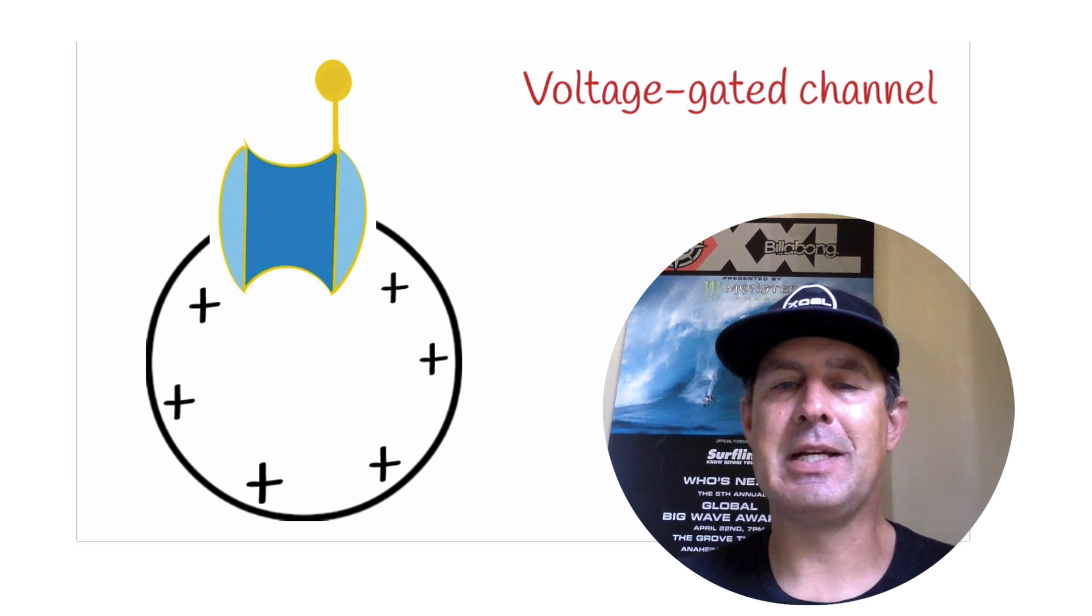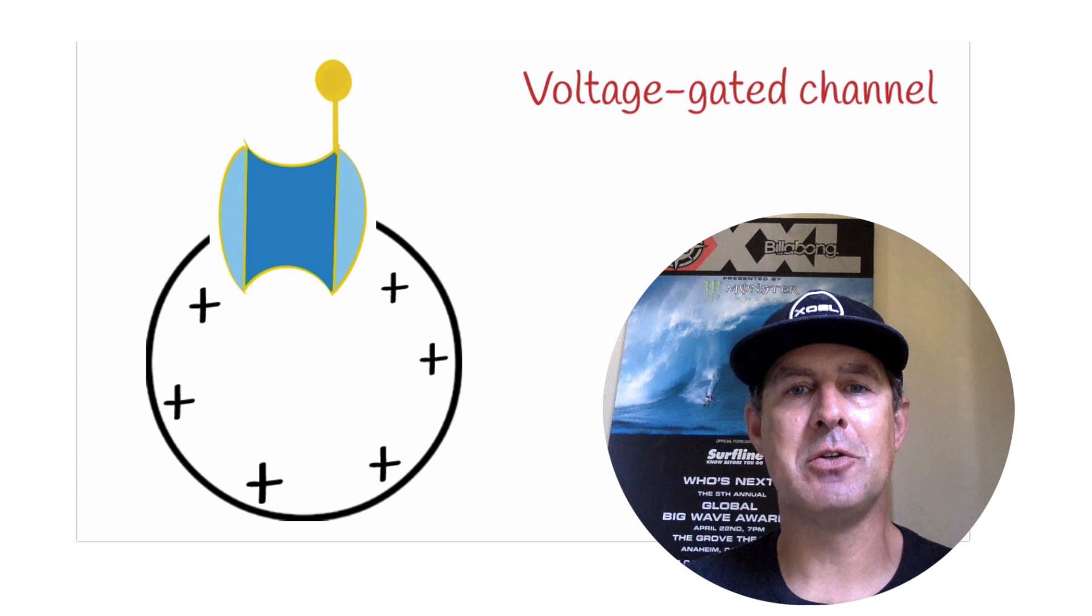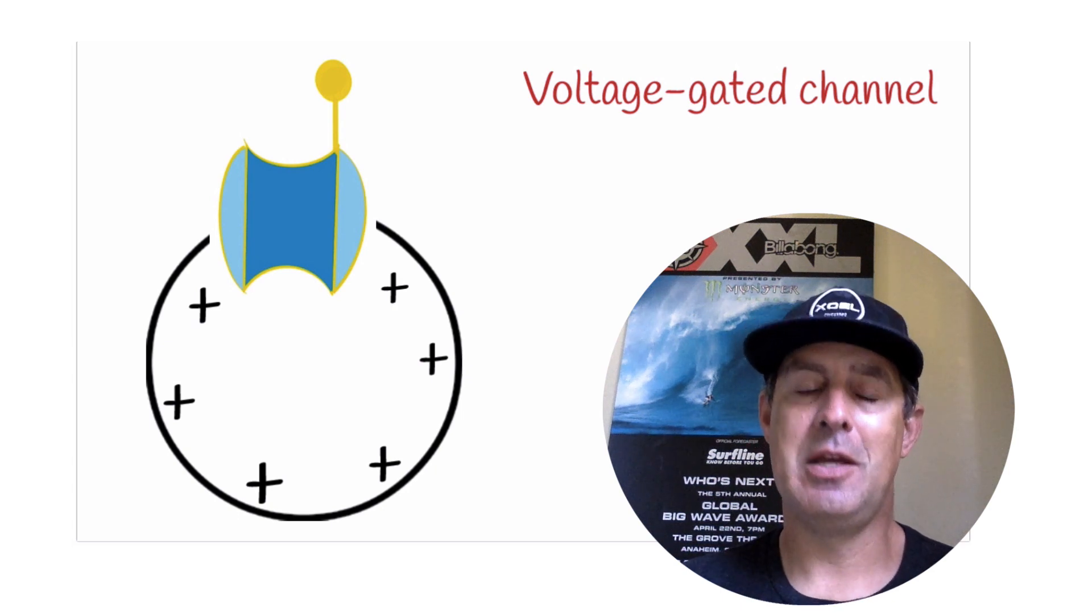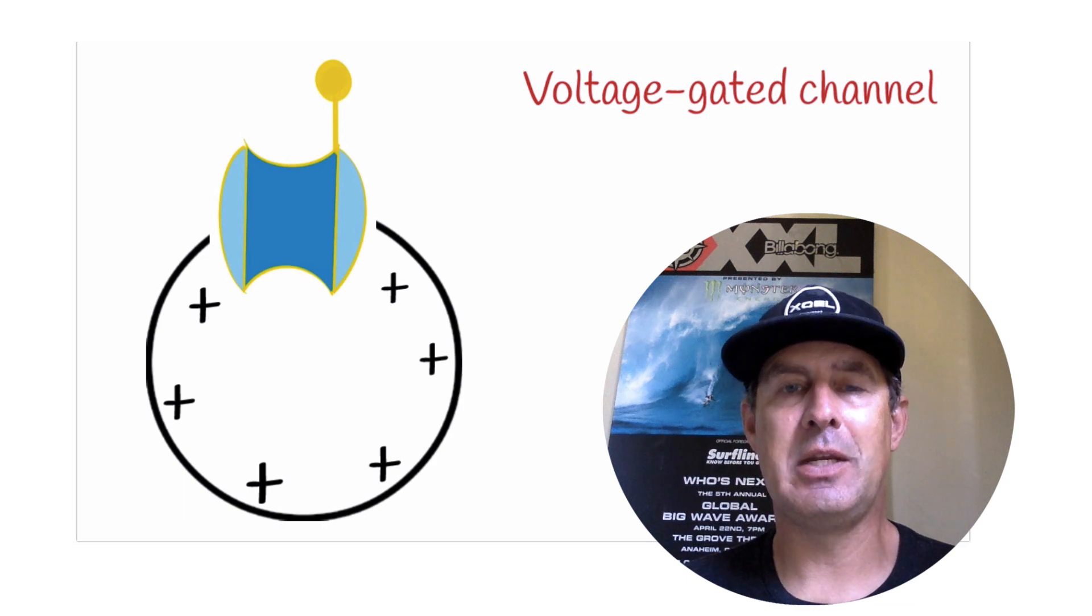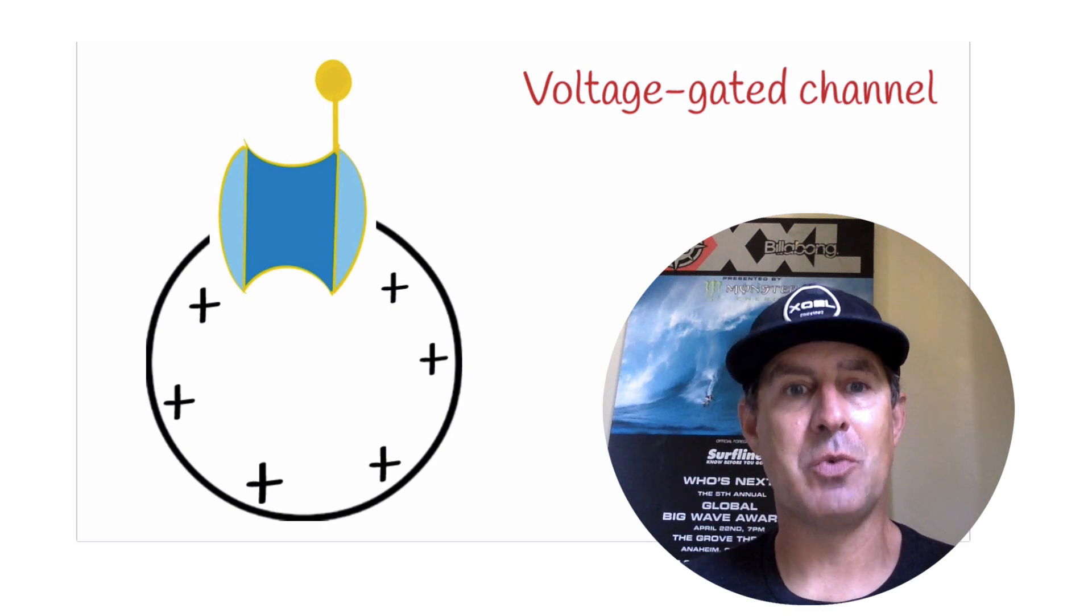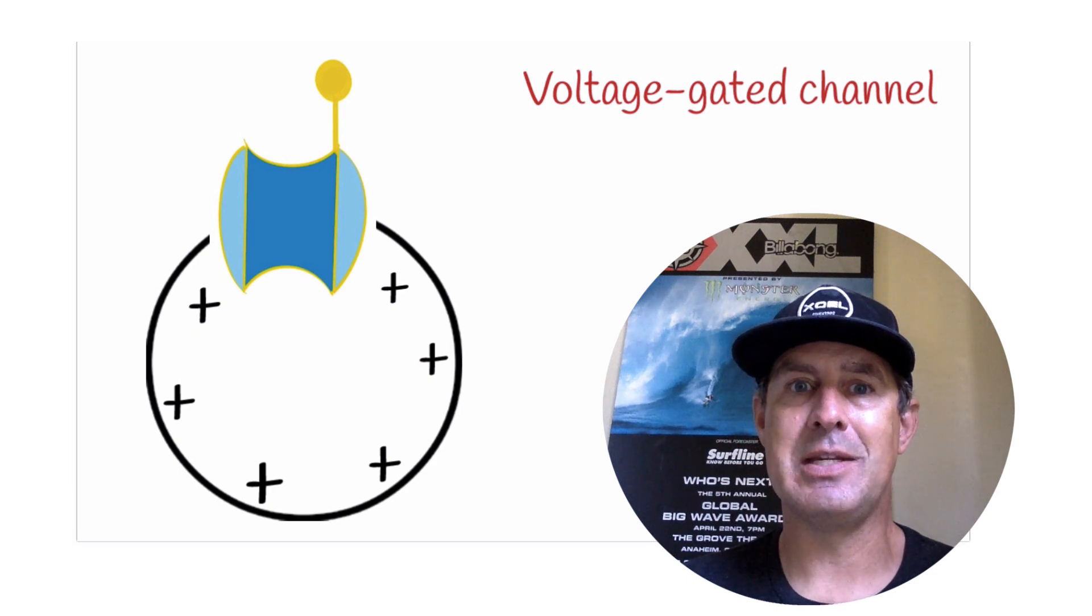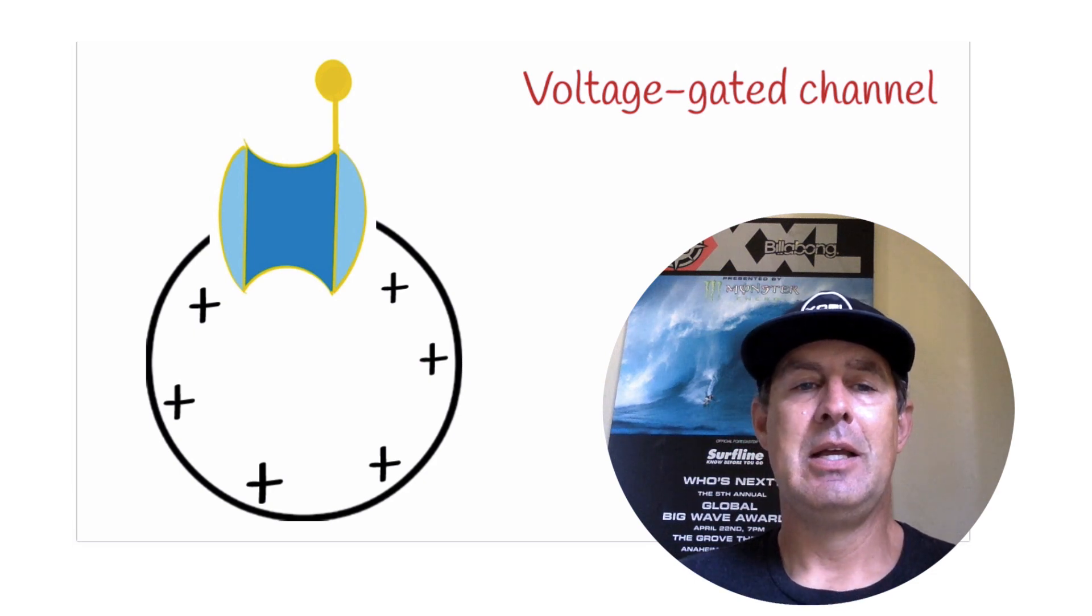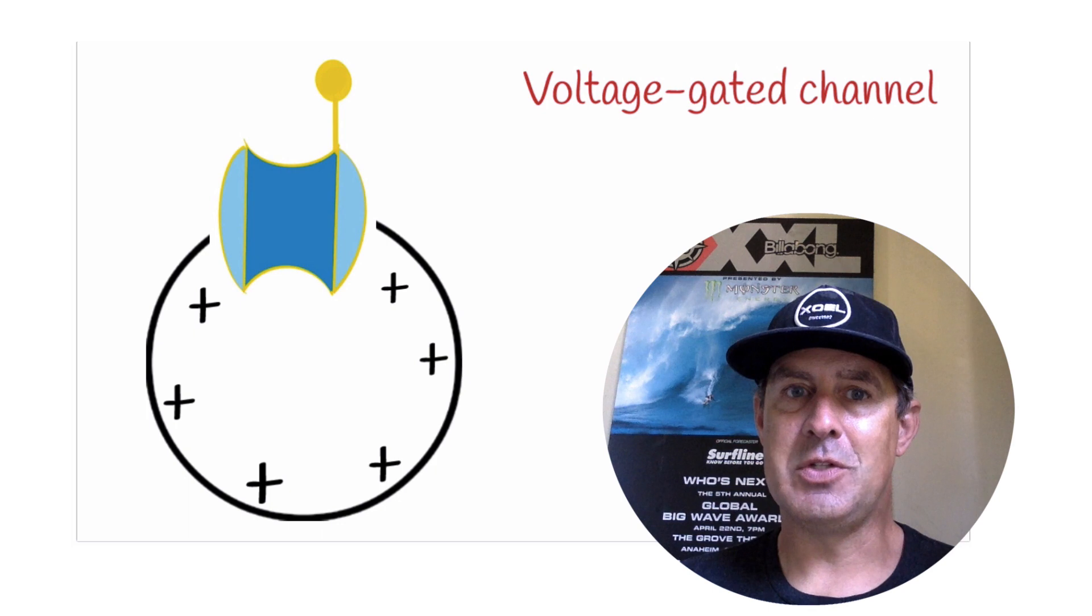Okay, so that is it for gated channels. We had ligand-gated channels, mechanically-gated channels, and voltage-gated channels. There are other types of channels that could get put in place via exocytosis, and we'll talk about that. That's significant with insulin and glucose. And that's it for today.